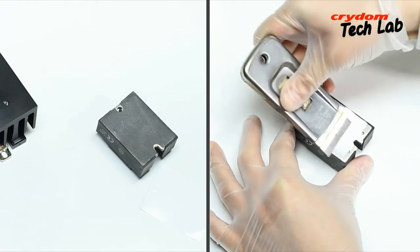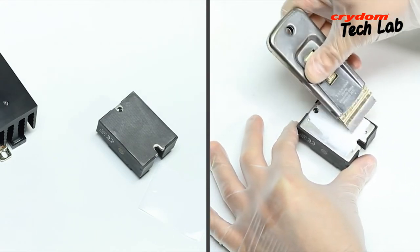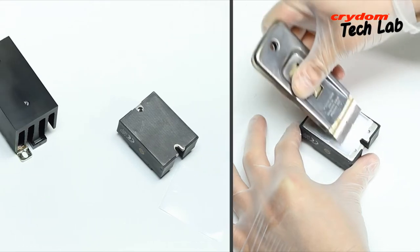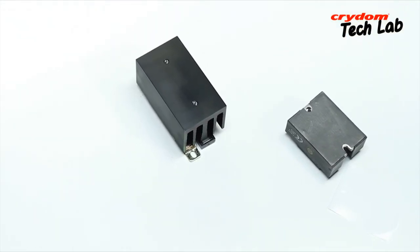Thermal pads can be placed on the heat sink or SSR, or provided pre-installed on the SSR by Crydom, generally an option identified by a suffix H on the end of the SSR part number.